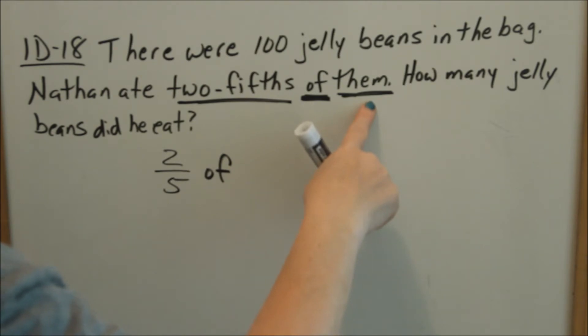Them represents the total jelly beans. Well, how many jelly beans did we have? 100. So two-fifths of the 100 jelly beans.